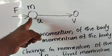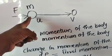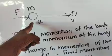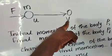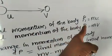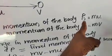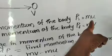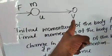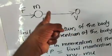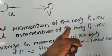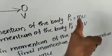Consider a body of mass M moving in a straight line with initial velocity U. A force F acts on the body. After some time interval T, the body changes its velocity to final velocity V. Here, U represents the initial velocity, V the final velocity, M the mass, and F the unbalanced force acting on the moving body. Initial momentum of the body, Pi, is equal to M × U.